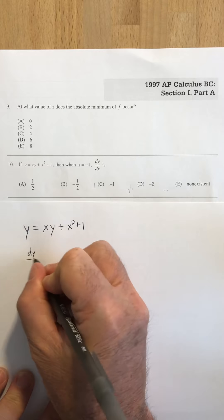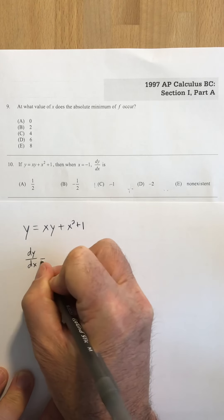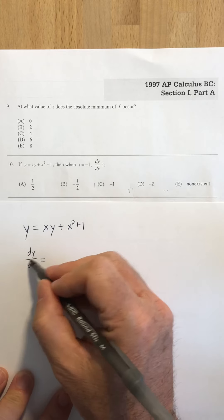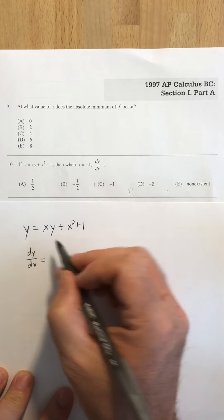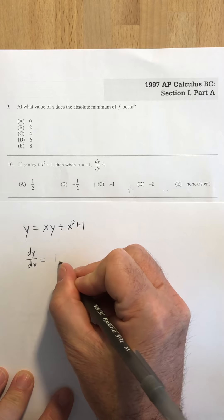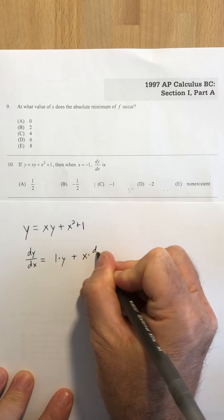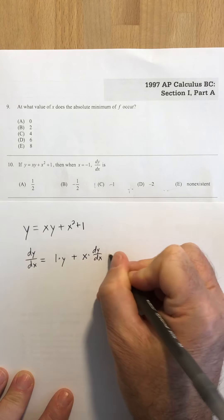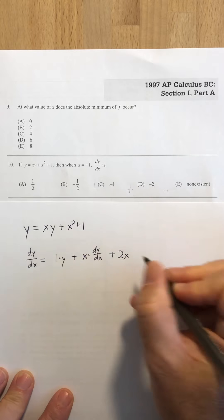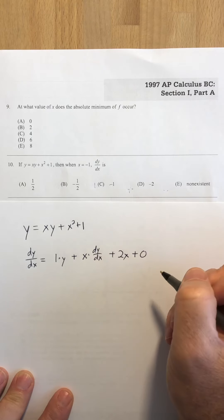So remember with implicit functions, you want to take the derivative of every term, and y terms are going to have dy dx. xy is a product, so I'm going to do the derivative of x times y plus x times the derivative of y, and 2x is the derivative of x squared, and the derivative of 1 is simply 0.